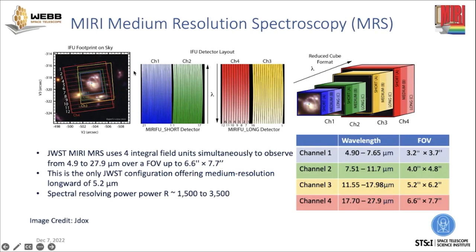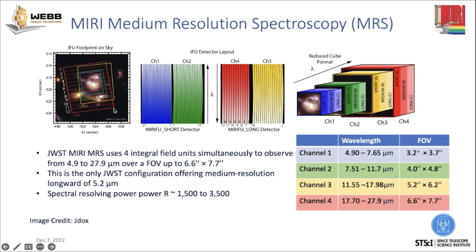As you can see in this footprint on the sky, all four IFUs are simultaneously observed and their names are channel 1, 2, 3, and 4. The shortest wavelength channel 1 has the smallest field of view of about 3.2 to 3.7 arc seconds, and the longest wavelength channel 4 has a field of view of 6.6 to 7.7 arc seconds. While you have four IFUs simultaneously observed, the spectra are projected onto two detectors.